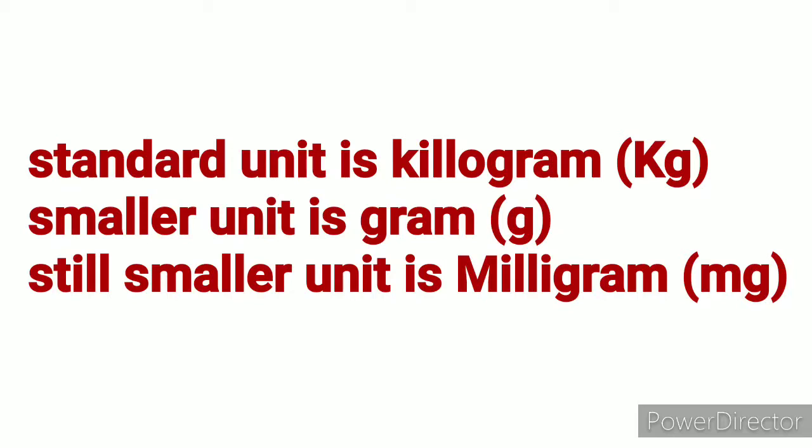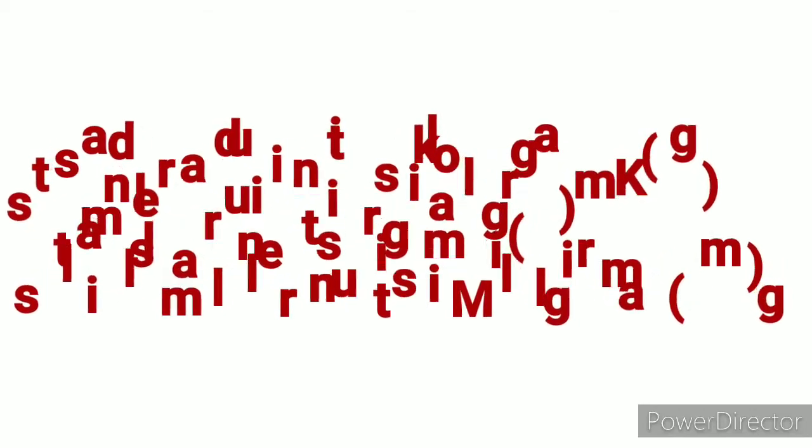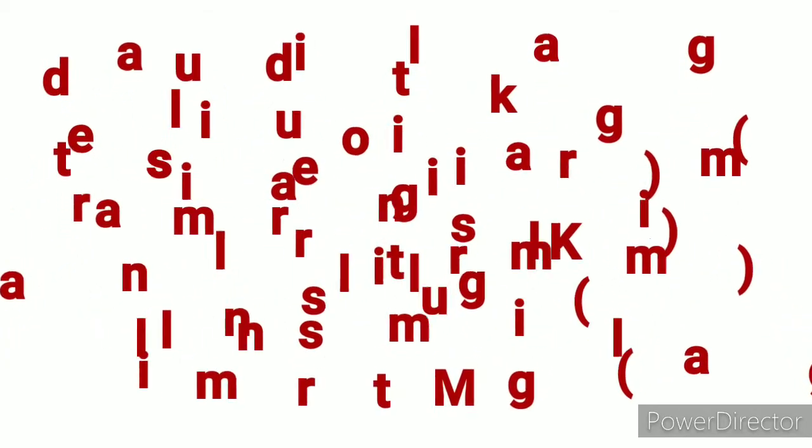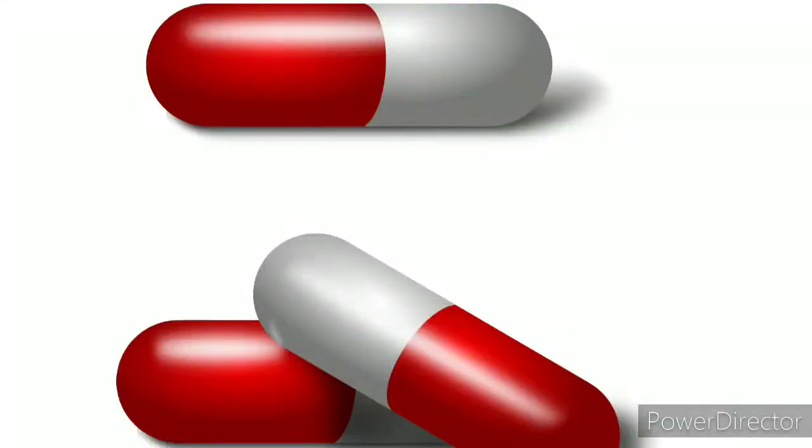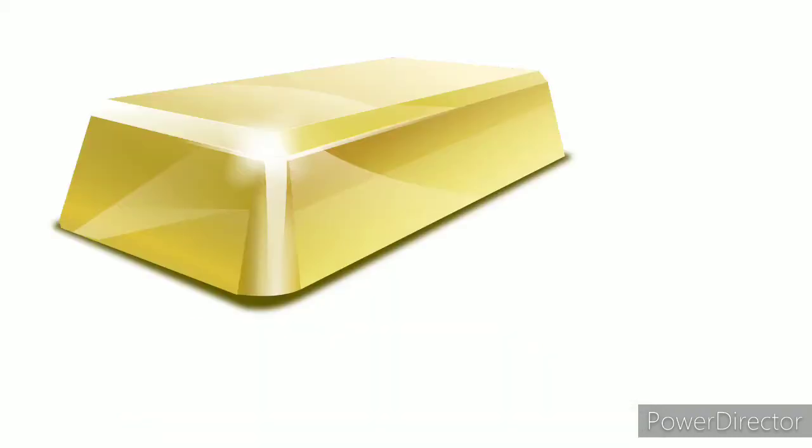We denote kilogram by kg, gram by g, and milligram by mg. We use the unit milligram to measure very small quantities of things like medicine, gold, etc.